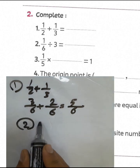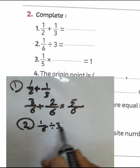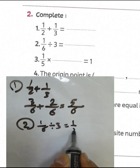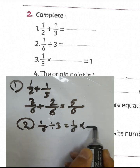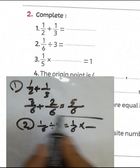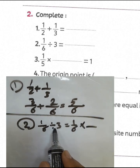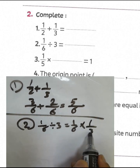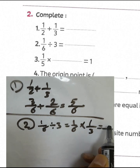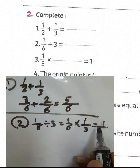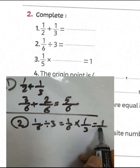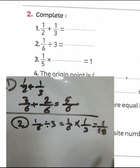Question number 2: 1 over 6 divided by 3. We write 1 over 6 and convert from division to multiplication, writing the reciprocal of 3, which is 1 over 3. 1 times 1 equals 1, and 3 times 6 equals 18. The result is 1 over 18.